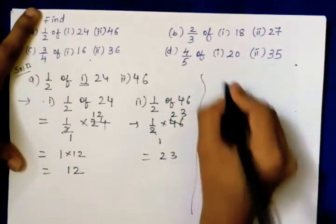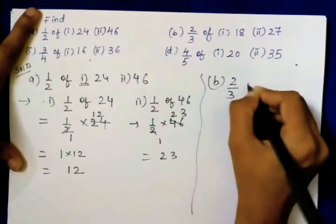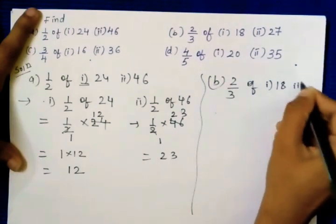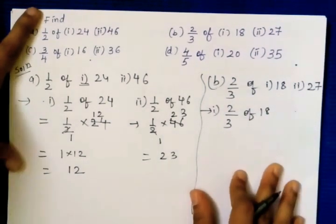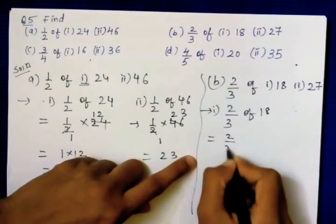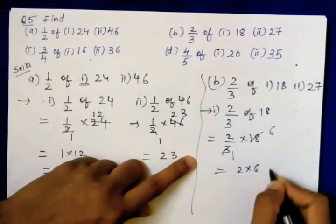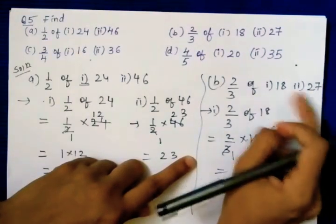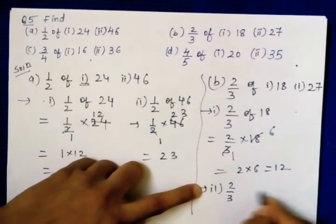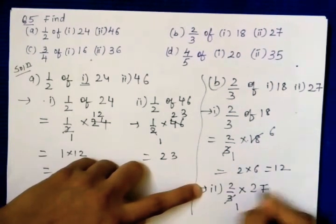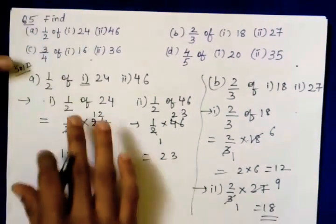Now part b: two-thirds of eighteen and twenty-seven. First one — two-thirds of eighteen: 'of' means multiply, so two-thirds into eighteen. Three and eighteen cancel — three ones and three sixes — leaves two into six, which is twelve. Second one: two-thirds of twenty-seven — two-thirds into twenty-seven. Three and twenty-seven cancel, leaving two into nine, which is eighteen.